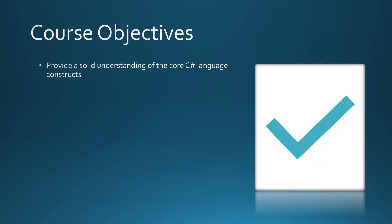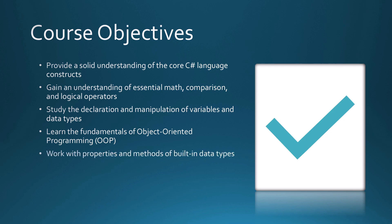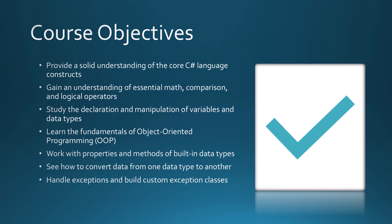By watching this course, I'm going to provide you with a solid understanding of the core C-Sharp language constructs. You'll gain an understanding of essential math, comparison, and logical operators. You'll study the declaration and manipulation of variables and data types. You'll learn the fundamentals of object-oriented programming. You'll work with properties and methods of the built-in data types. You'll see how to convert data from one data type to another.